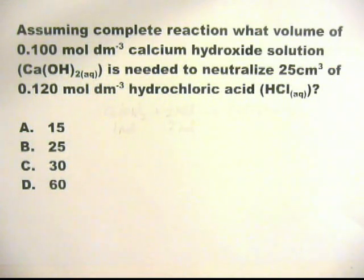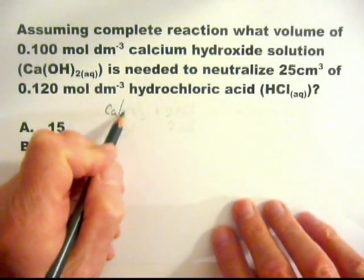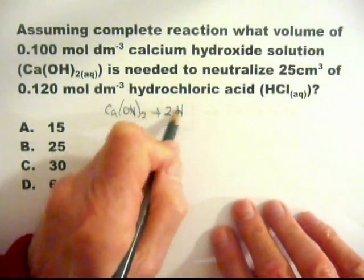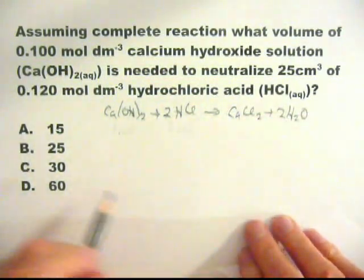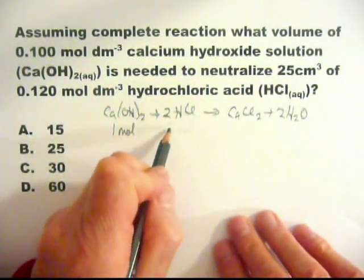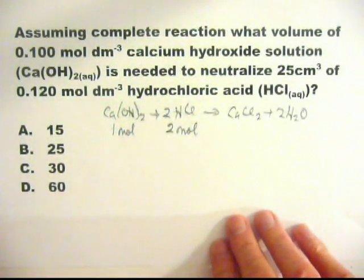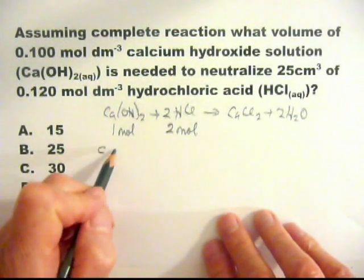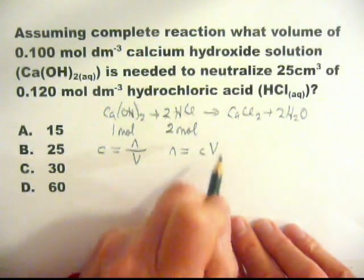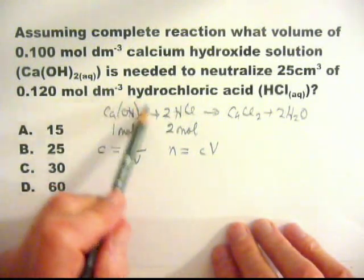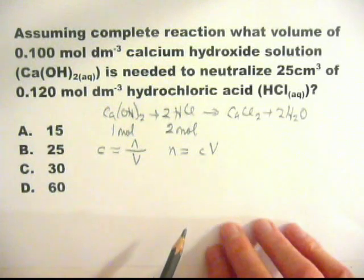This question is another neutralization or titration question. Both words are used by the examiner, so be aware of that. And they have quite decently given you the formulae of the chemicals concerned. Let me put the equation down. Ca(OH)₂ plus 2HCl goes to CaCl₂ plus 2H₂O. And notice that one mole of calcium hydroxide is equivalent to two moles of hydrochloric acid.